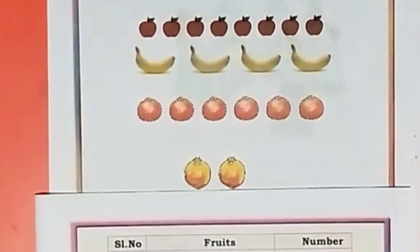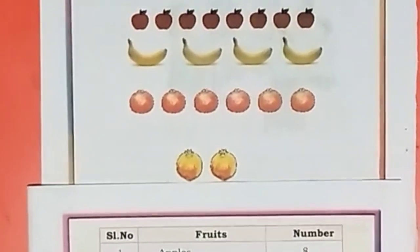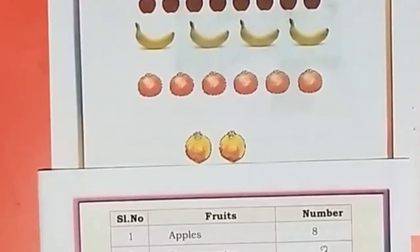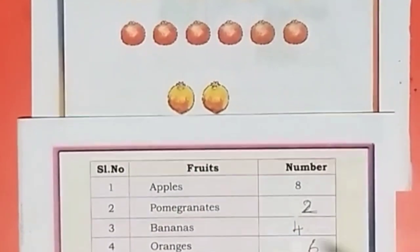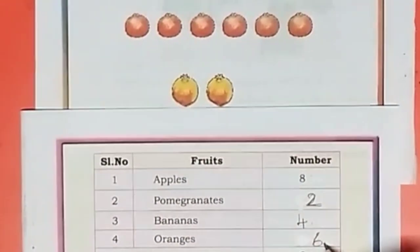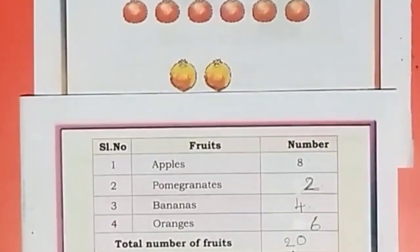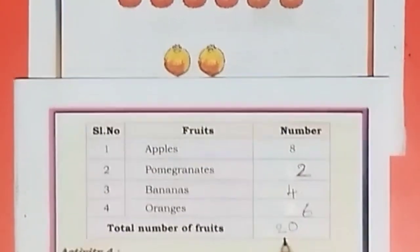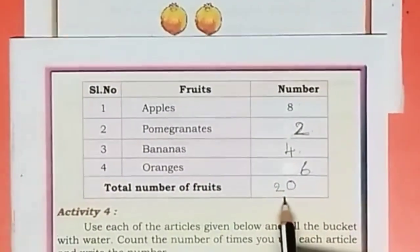So, total: 8 plus 2 is 10. 10 plus 4 is 14. 14 plus 6 is 20. So, the total number of fruits is equal to 20.